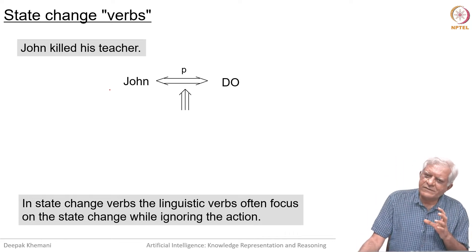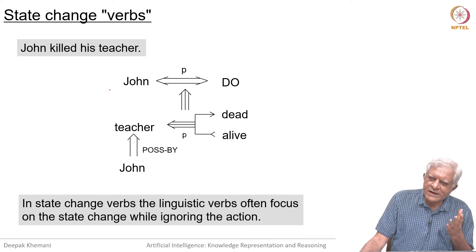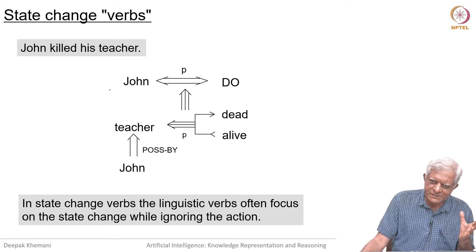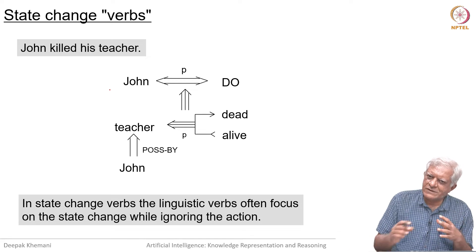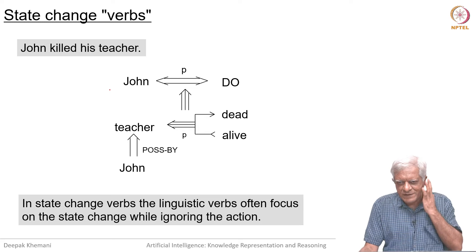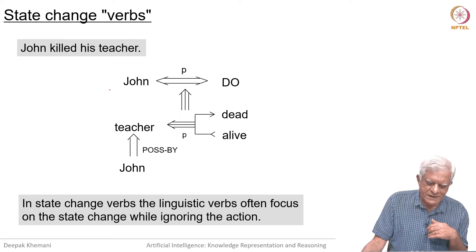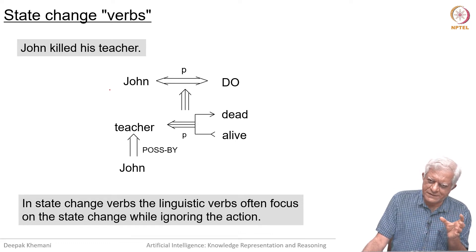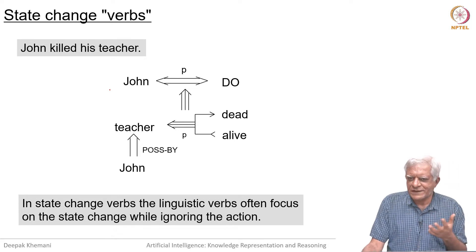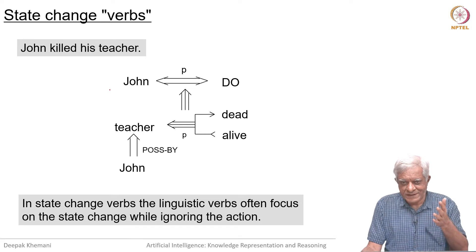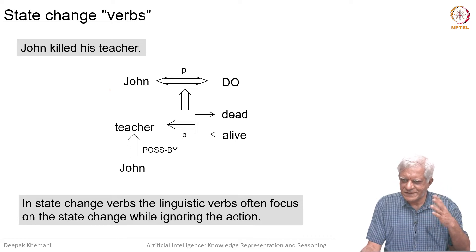A lot of words in English which are verbs are not actions conceptually. Here is a gruesome example: 'John killed his teacher.' In English, 'killed' is a verb, but it is not an action conceptually because we cannot visualize what John is doing. John could have done a hundred different things which resulted in the death of his teacher. Such verbs are not really actions but are causal relations between doing things and some state change happening.